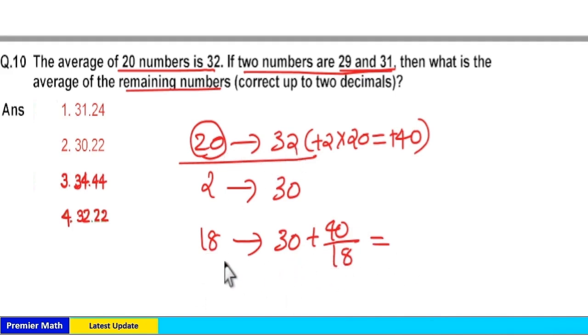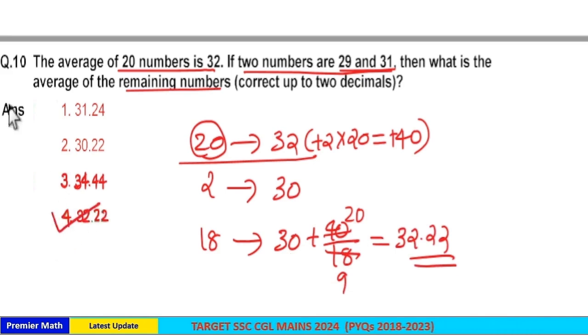Here 18 numbers average is equal to 30 plus 40 by 18. 2 goes 9 times in 80, 20 times in 40. 20 by 9 is 2.2. 9 goes 2 times in 20. So 30 plus 2.2 is equal to 32.22 is your average option. 4 is your answer.